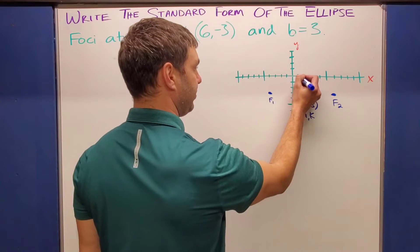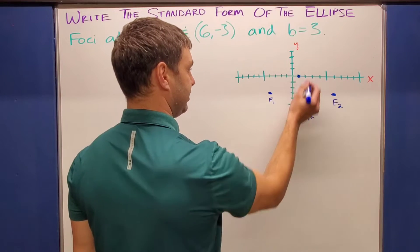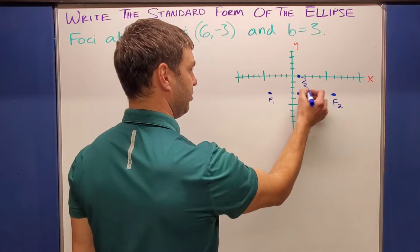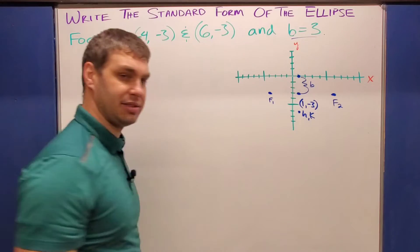So if I go up one, two, three, that's on my X axis there. And then down one, two, three right here. That's this value B that was given to us in our directions.